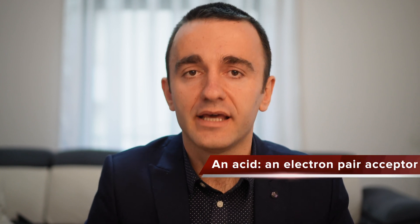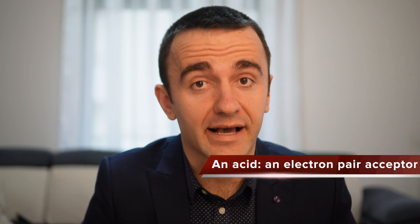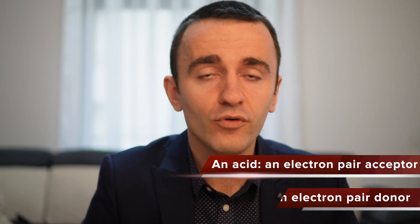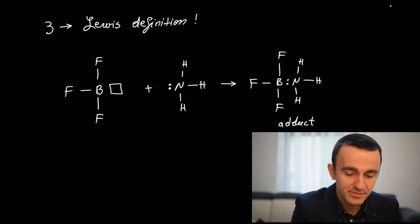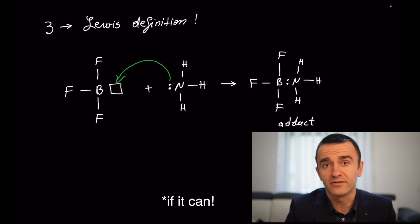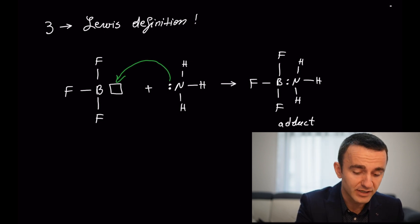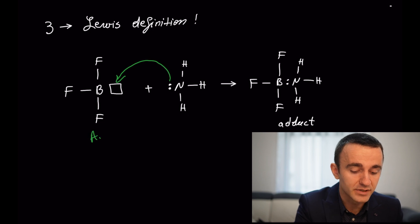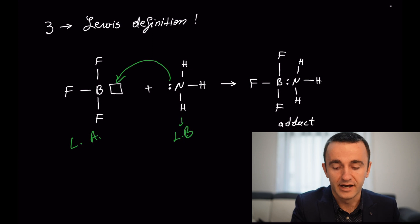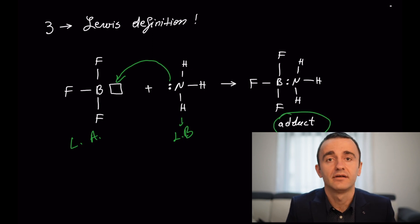Let's move now to the third definition: the Lewis definition. According to Lewis, an acid is an electron pair acceptor and a base is an electron pair donor. For example, boron trifluoride (BF3) accepts an electron pair from ammonia because it has an empty orbital. In this case, boron trifluoride is considered a Lewis acid and ammonia a Lewis base, and they form an adduct as the product.